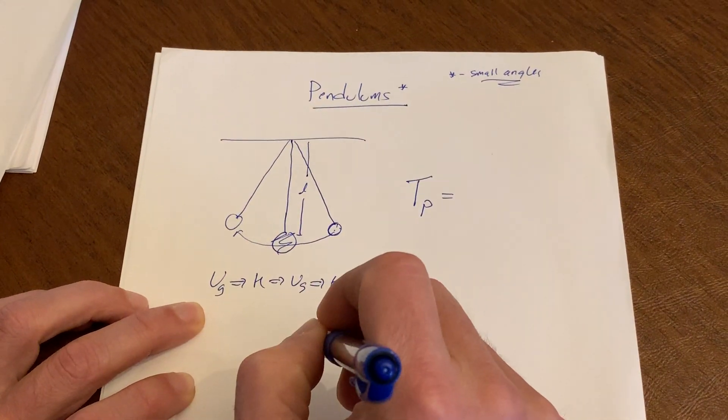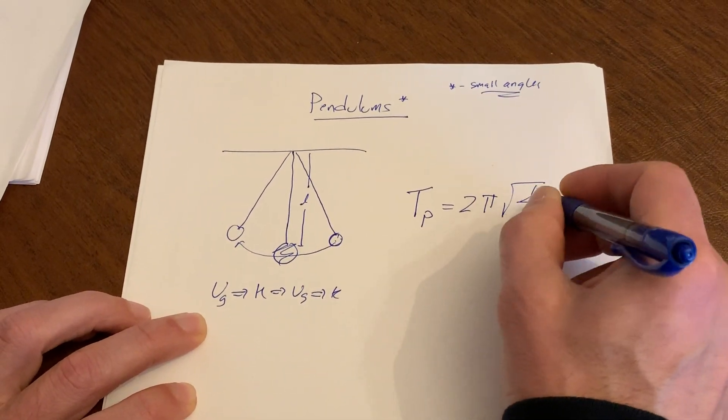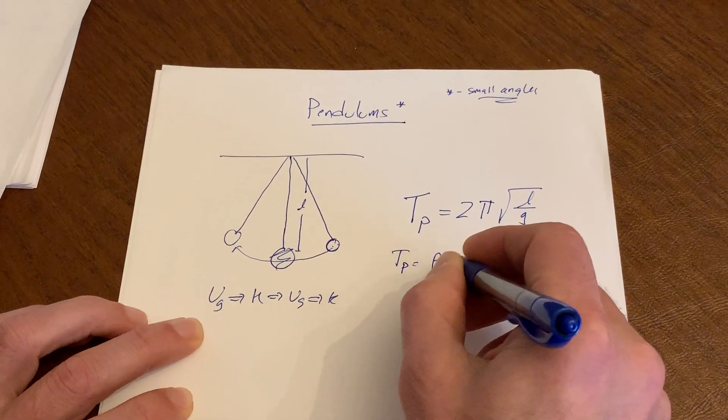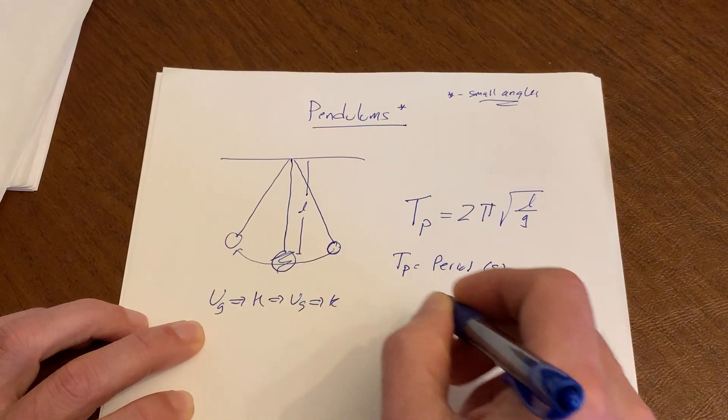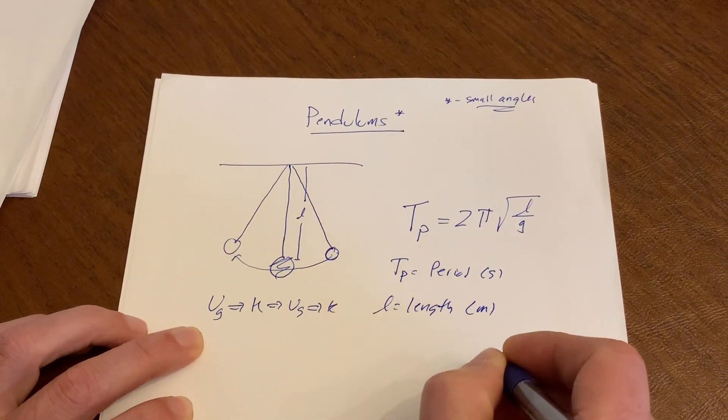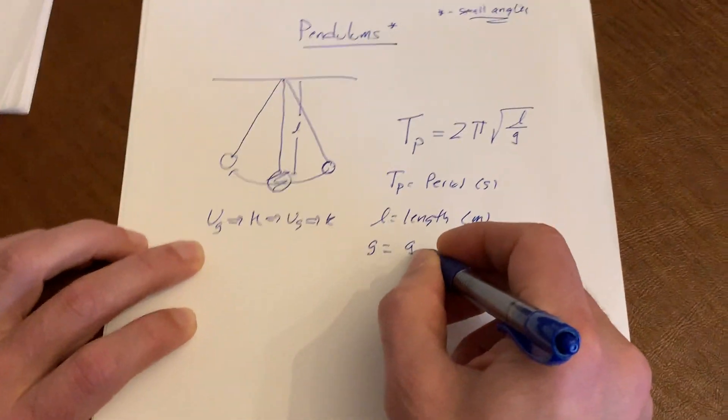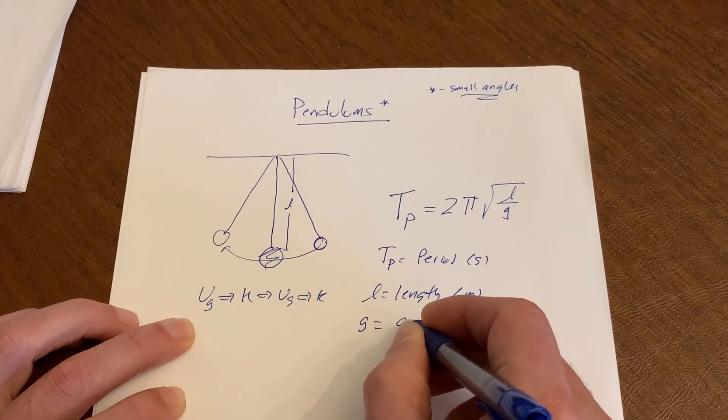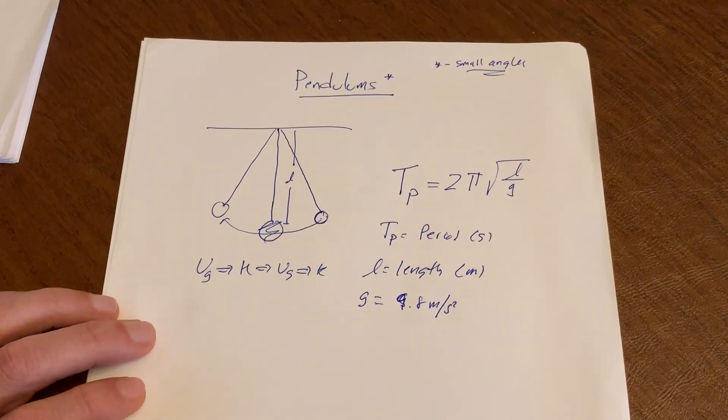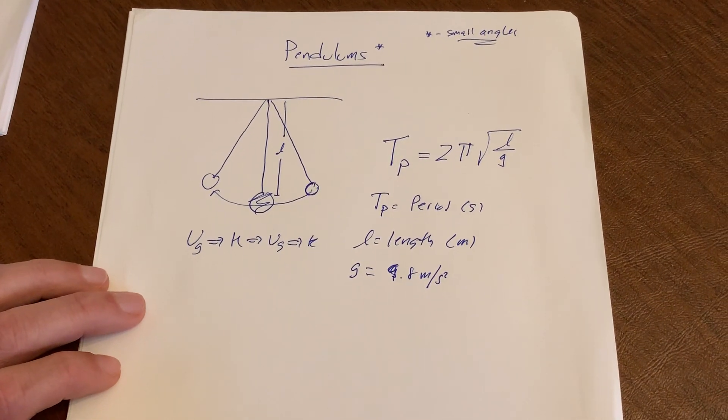What is or how do we determine the period of a pendulum? Period of a pendulum, or T, pendulum P, is going to be equal to 2 pi radical L over G, where obviously Tp is the period. That's in seconds, obviously. L, that's going to be my length. That's obviously in meters. And G, well, we all know what G is. That's the acceleration due to gravity, and that's going to be 9.8 meters per second squared.